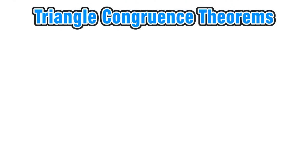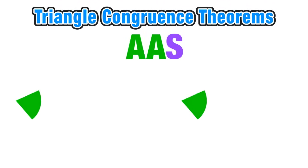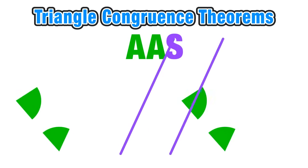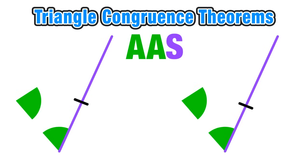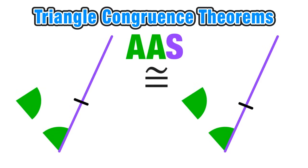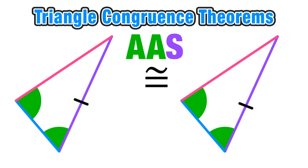Our next theorem is very similar to angle-side-angle — it's called angle-angle-side. When in two triangles we have a pair of corresponding congruent angles, a second pair of corresponding congruent angles, and a pair of corresponding congruent sides, we can prove congruence. Don't confuse angle-side-angle and angle-angle-side, because both involve two congruent angles and one congruent side. The difference is that in angle-angle-side the congruent angles are consecutive and the congruent side is next to them instead of in between them. Even though the order is different, we still have enough information to prove that the two triangles are congruent.